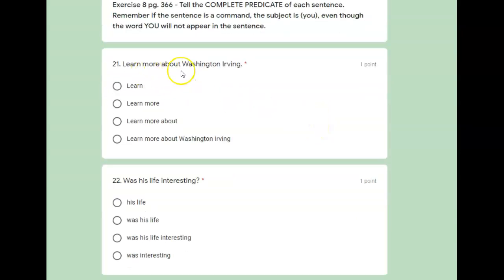So 21, learn more about Washington Irving. And that looks like a command. So the subject would be you. The predicate, what are you supposed to do? Everything else. Learn more about Washington Irving. So again, complete predicate means everything else, all.